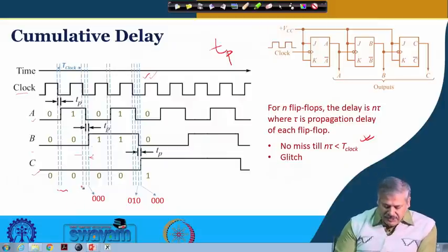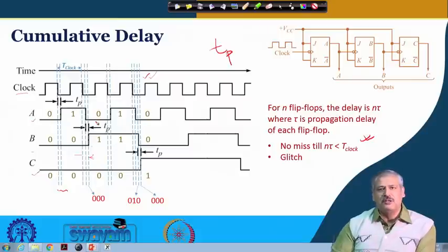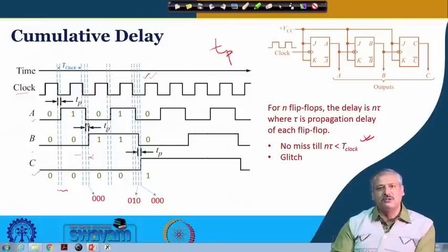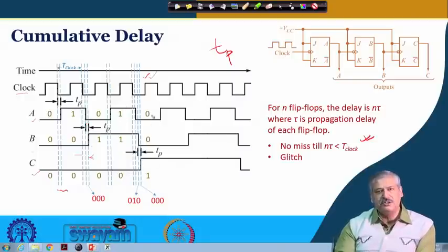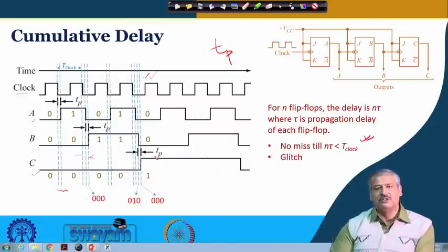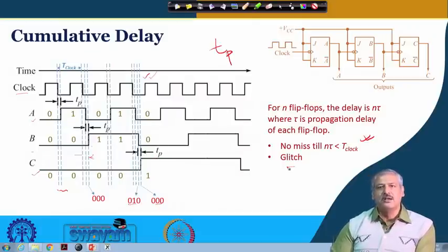Another issue: after 0 0 1, the state 0 1 0 is supposed to come, but momentarily for a small duration 0 0 0 appears because A has changed but B is still taking one more propagation delay to change. Similarly, after 0 1 1, you expect 1 0 0, but momentarily 0 1 0 and then 0 0 0 appear before 1 0 0 arrives. This can cause glitches in the circuit, which one needs to be careful about.